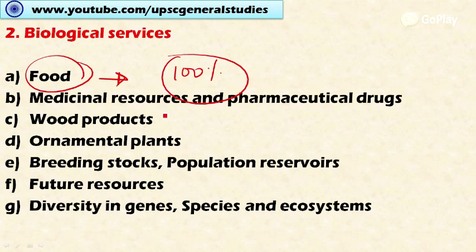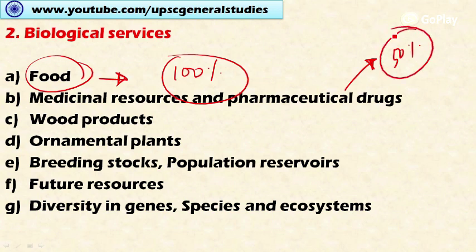Biodiversity also provides medicinal resources and pharmaceutical drugs. Even in the present advanced age, fifty percent of chemical medicines are based on nature. Next, biodiversity provides wood products — for example, timber used for furniture, building ships, and various other purposes.